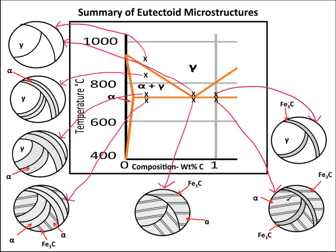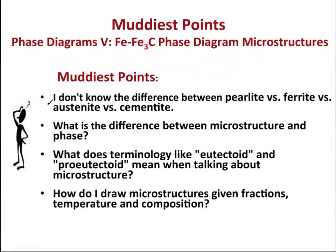So there you have it — all your microstructures in one place. This screencast has successfully addressed the given muddiest points. We talked about the difference between pearlite, ferrite, austenite, and cementite; the difference between a microstructure and a phase; what pro-eutectoid and eutectoid mean when talking about microstructure; and how to draw the microstructure given fractions, temperature, and composition. If you have any questions, please leave them in the comment section. If you need to learn about the calculations, watch the previous video, and happy engineering!